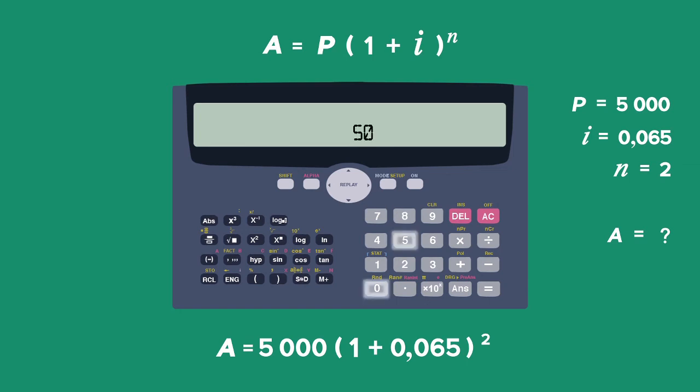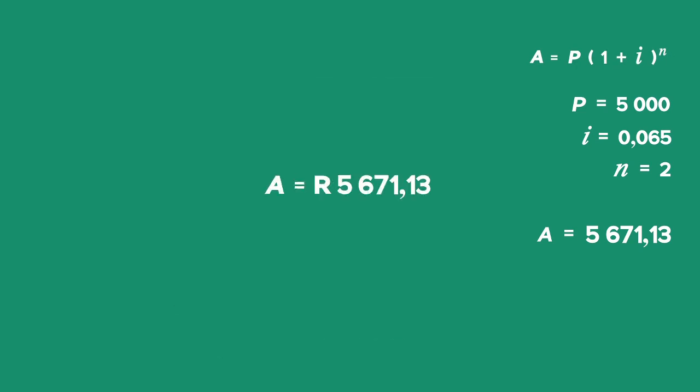We write 5,000 open brackets 1 plus 0.065 close brackets raised to the power of 2 for our two years, and that gives us 5,671 rand and 13 cents.